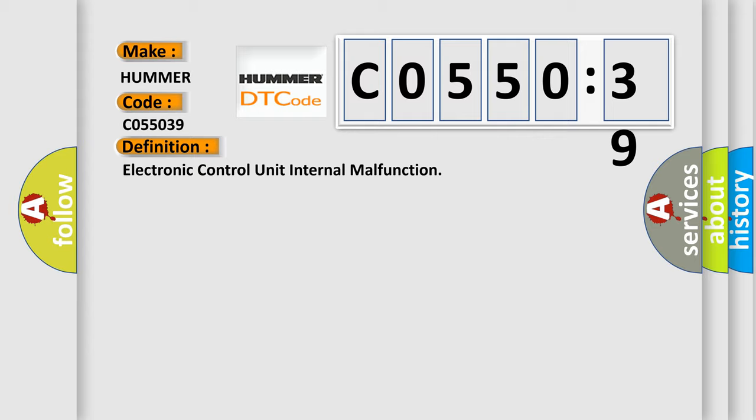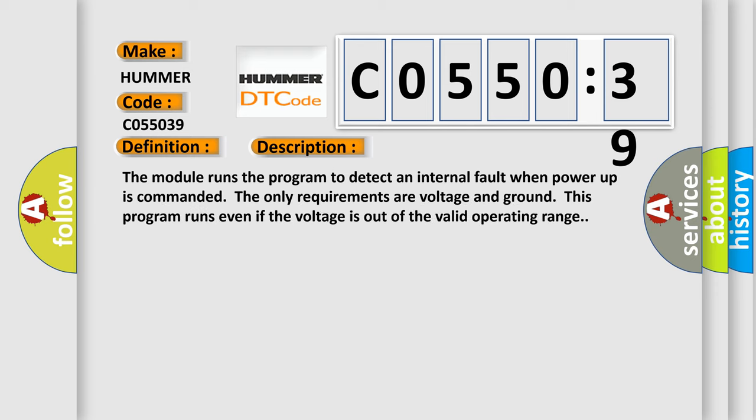And now this is a short description of this DTC code. The module runs the program to detect an internal fault when power-up. The only requirements are voltage and ground. This program runs even if the voltage is out of the valid operating range.